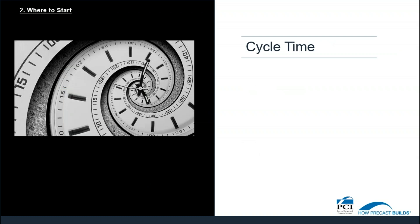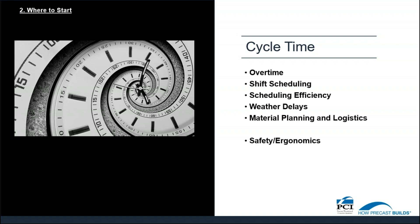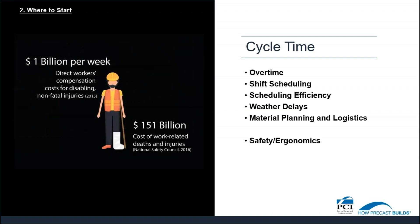Let's look at C in the CLR. The C represents cycle time — the total time from the beginning to the end of a process that includes both process time and delay time waiting to take the next action within the process. There are many elements to consider when looking at the cost associated with cycle time, including the availability and use of overtime, shift scheduling, scheduling efficiency, weather delays, and material planning and logistics. It's also important to note that costs not only include direct costs but also indirect or hidden costs. A higher cycle time can mean higher costs associated to these elements, increasing costs to the business.